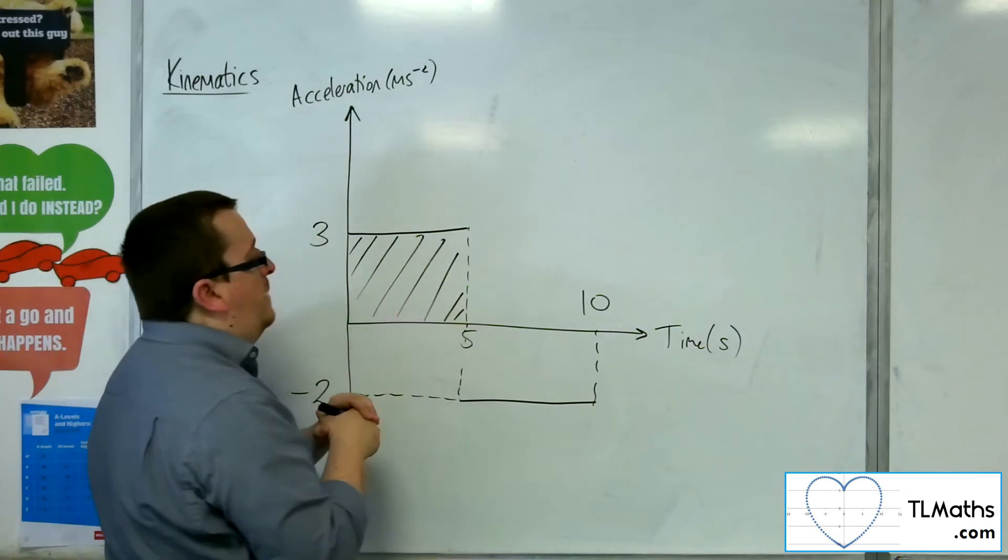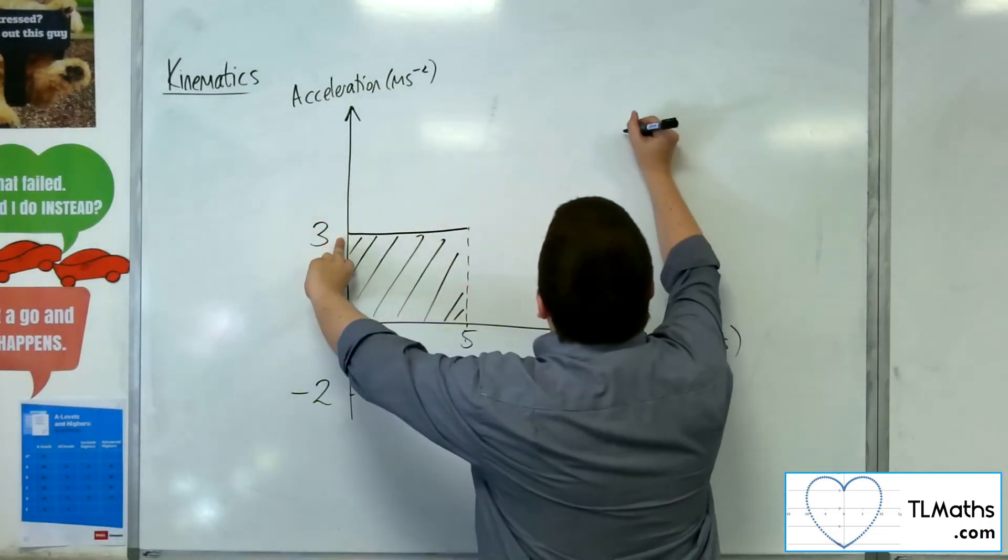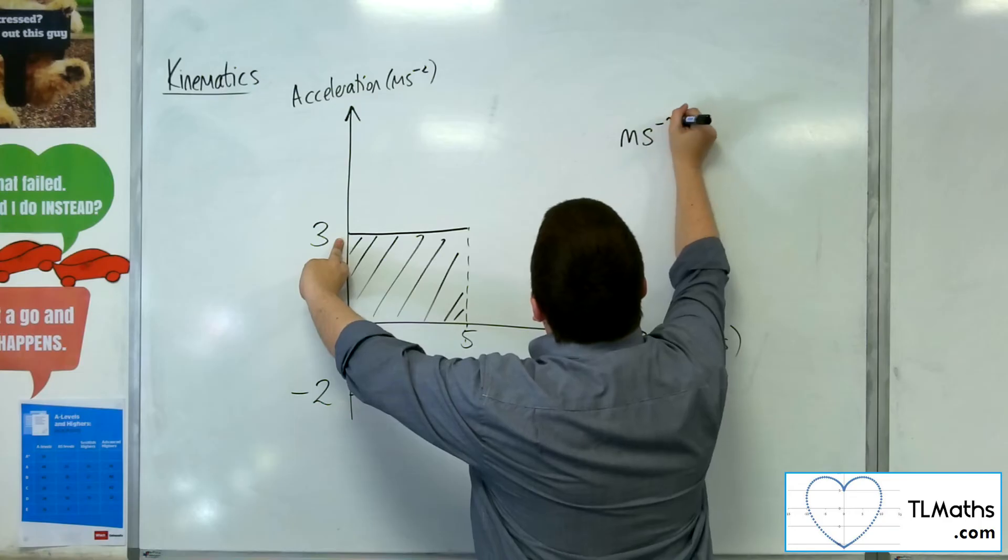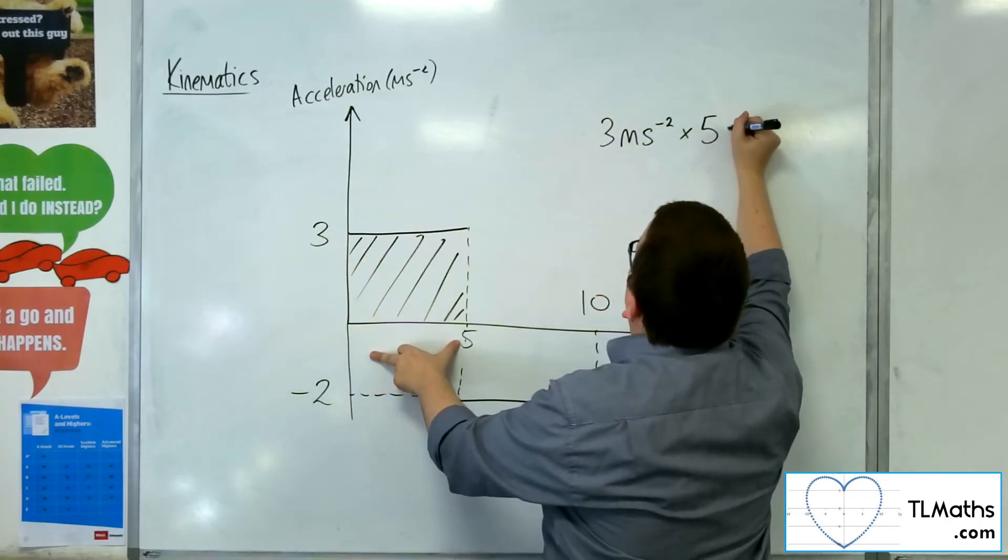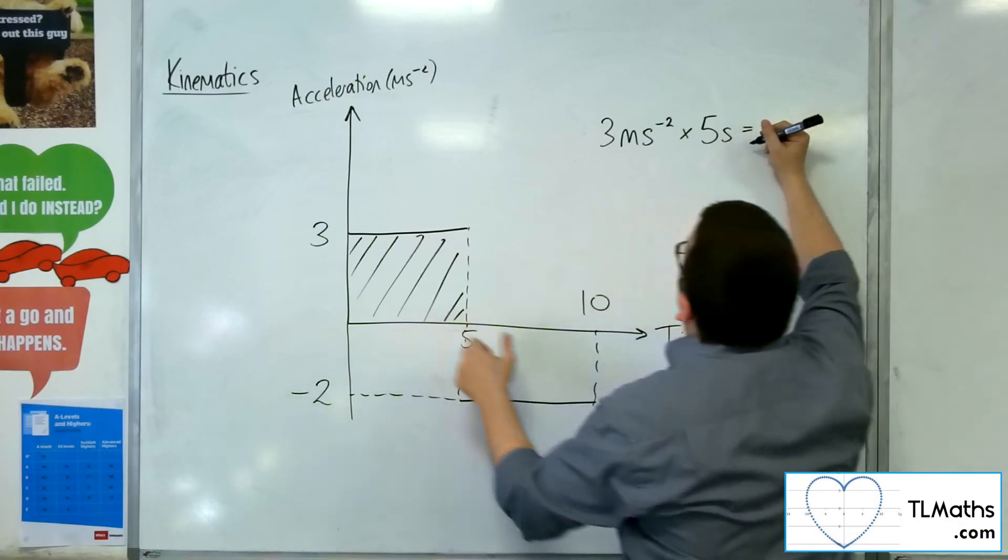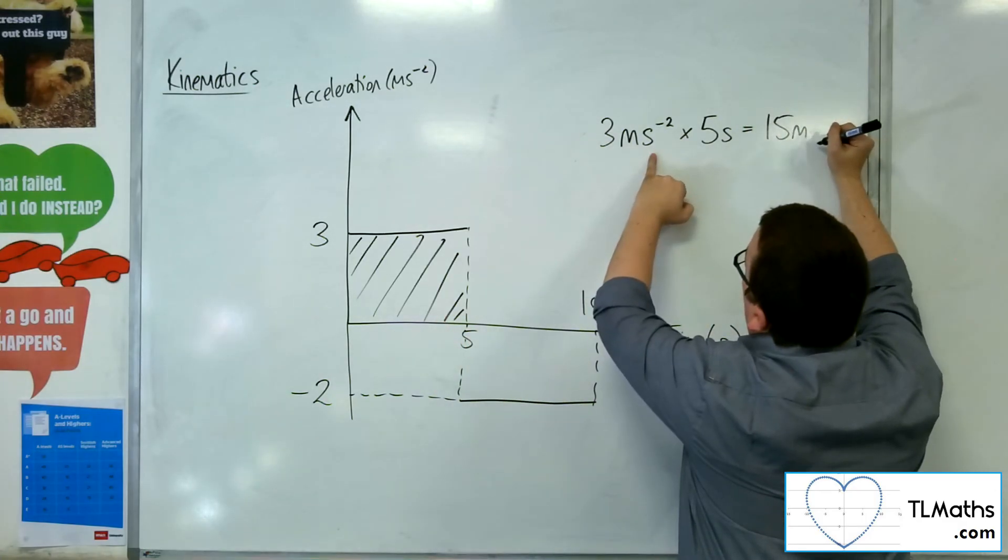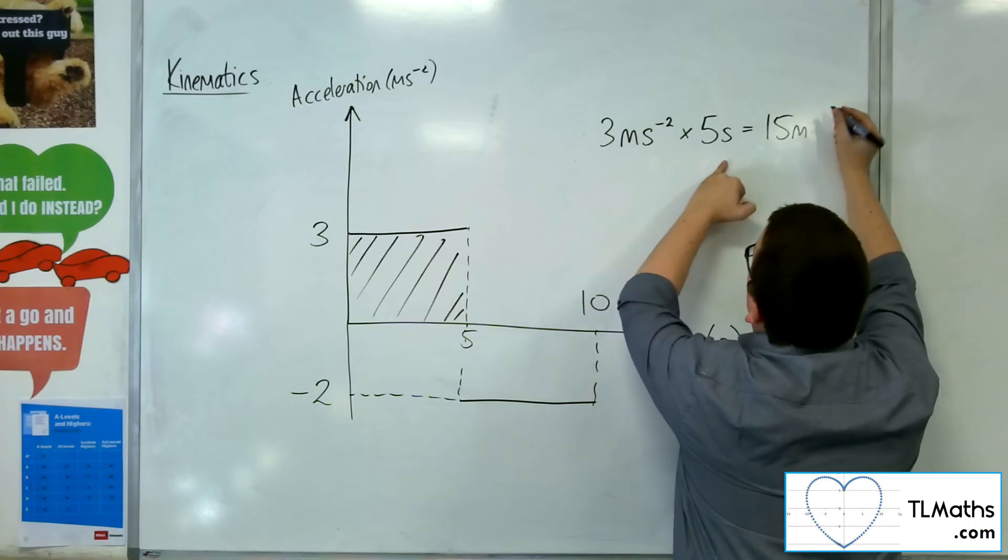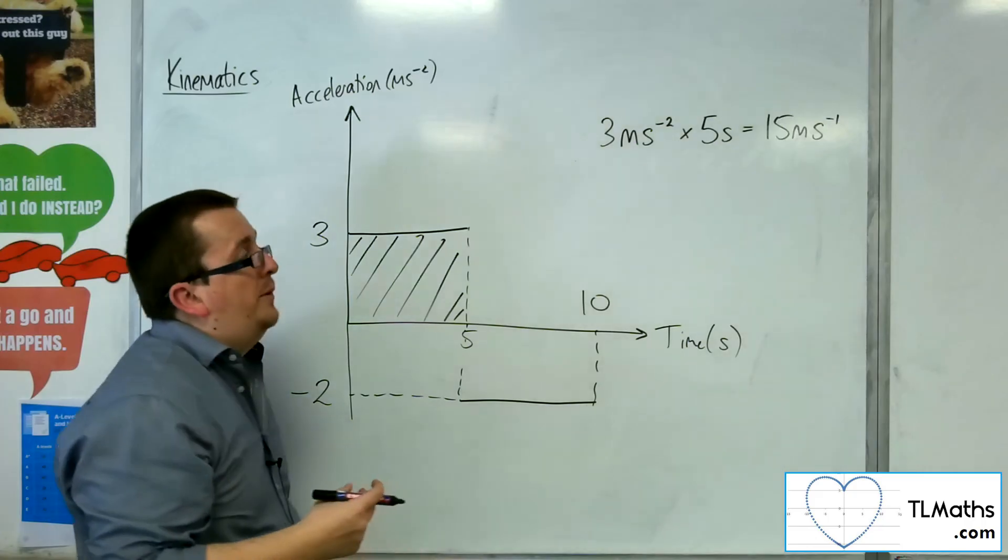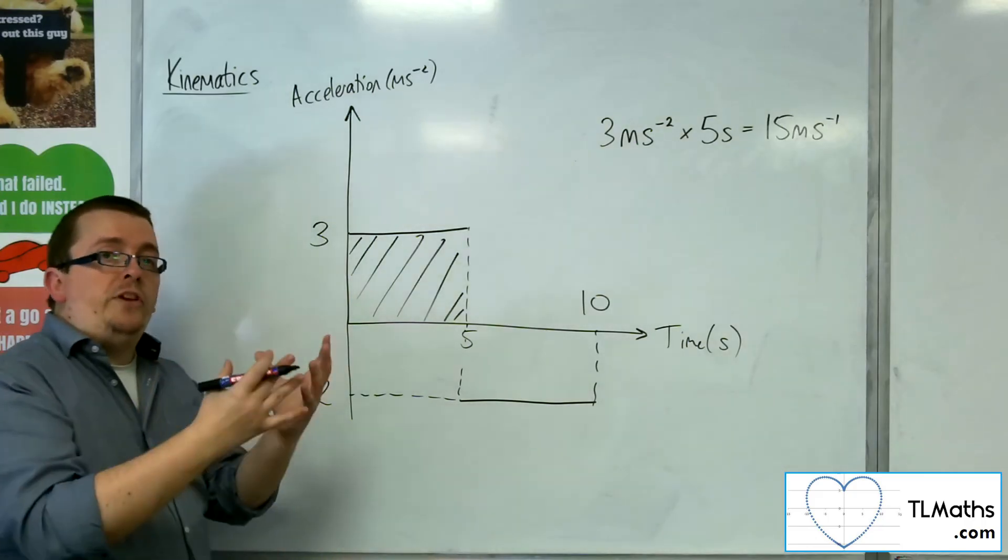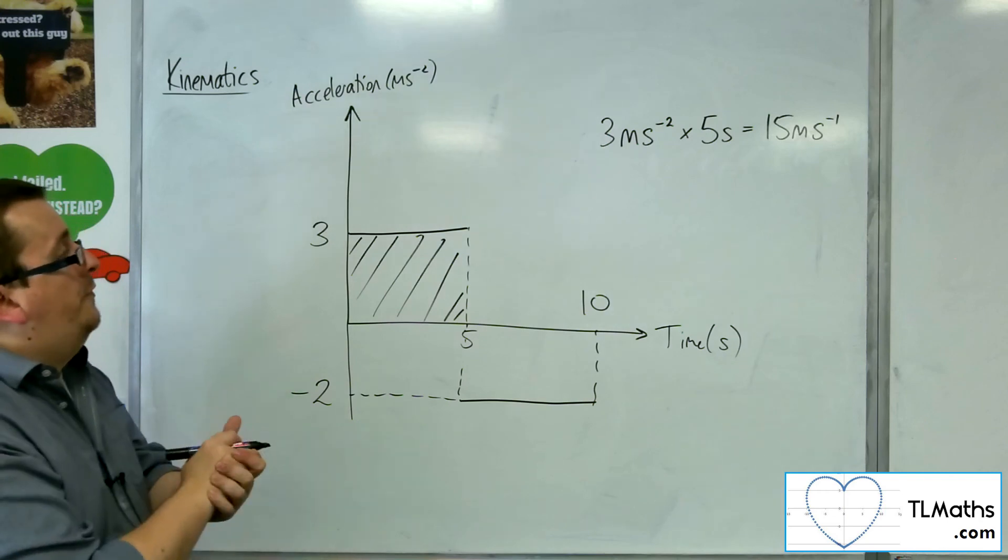Because what you've got is an acceleration being multiplied by five seconds, which will leave you with 15 meters. And seconds to the power of minus two times seconds to the power of one will leave you seconds to the power of minus one. So there's 15 meters per second, and that tells you the change in velocity for the first five seconds.